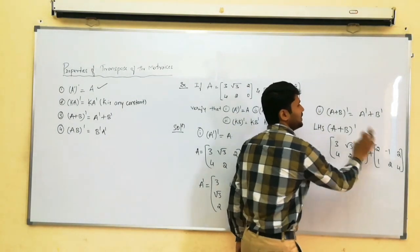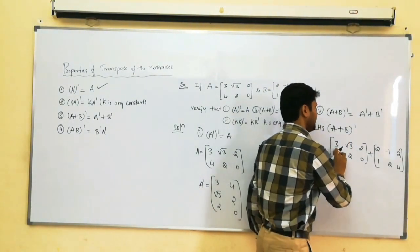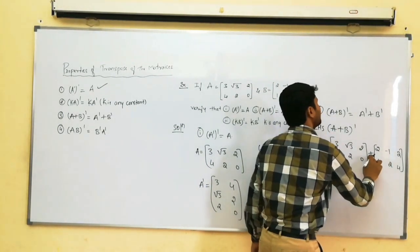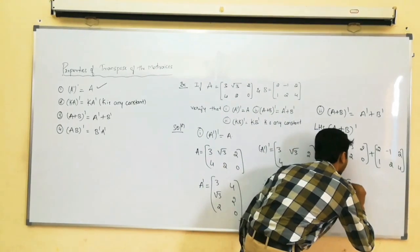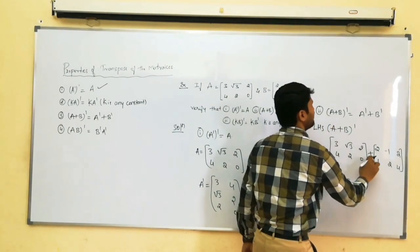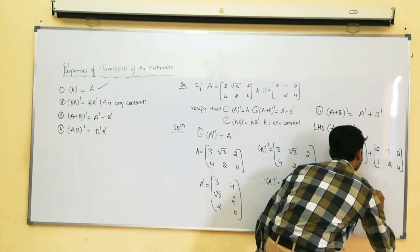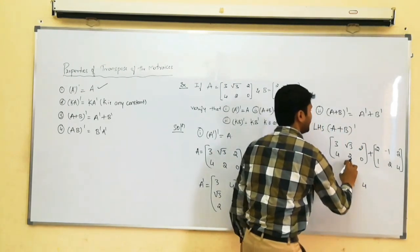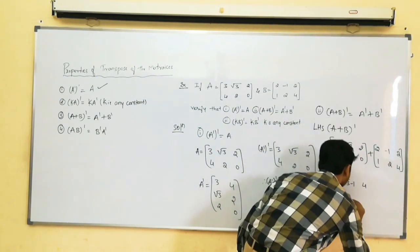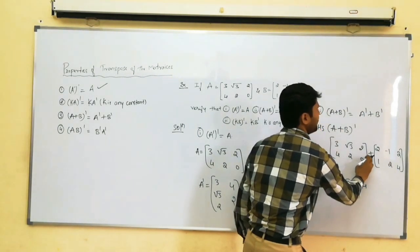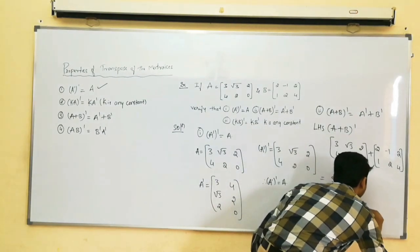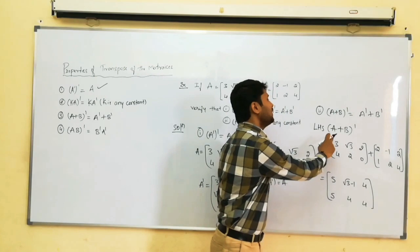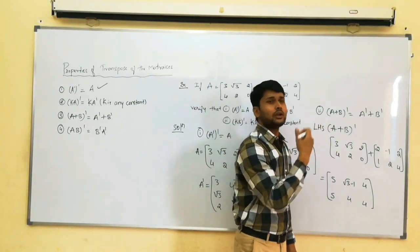Adding element by element: 3 plus 2 = 5; root 3 plus minus 1 = root 3 minus 1; 2 plus 2 = 4; 4 plus 1 = 5; 2 plus 2 = 4; 0 plus 4 = 4. This is our A plus B matrix. But we have to find A plus B whole transpose.